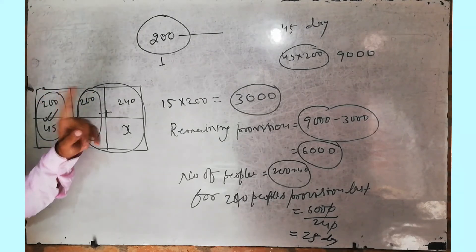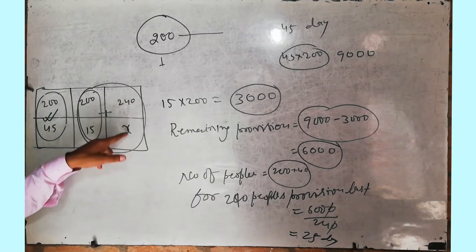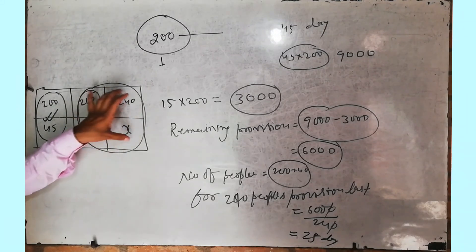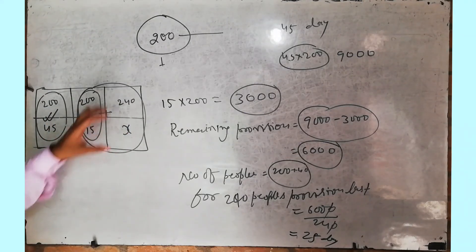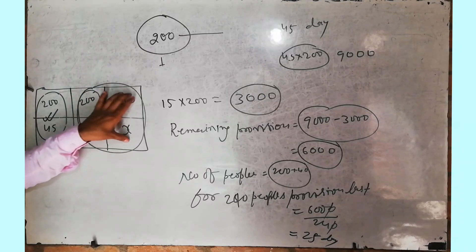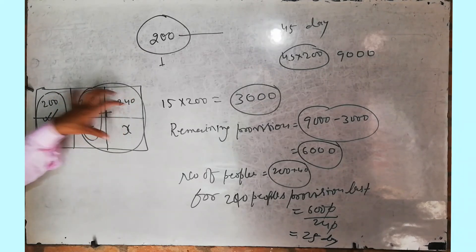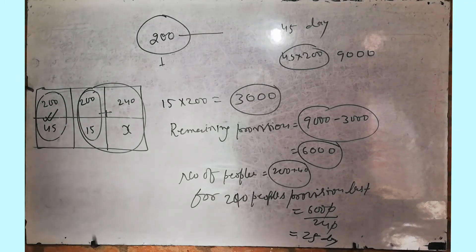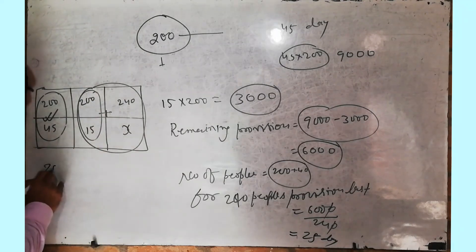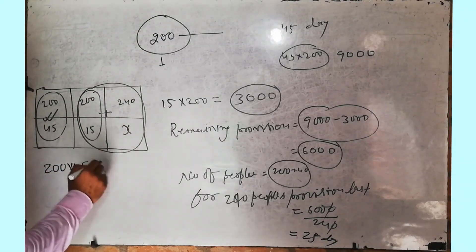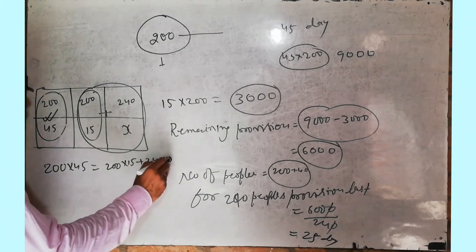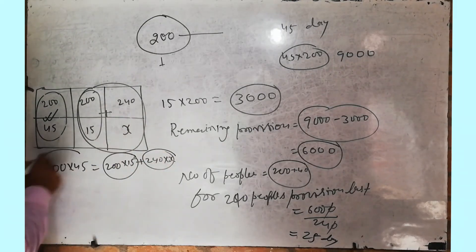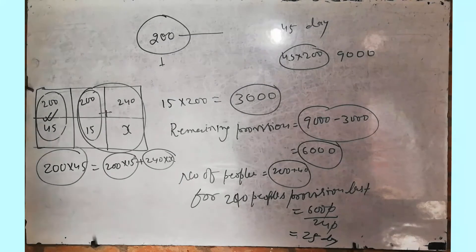After that, 40 more are added. Now how many days will the remaining food last? Simply divide: total remaining 6000 divided by 240 people gives the number of remaining days. That comes to 25 days. This is the inverse proportion method — the total product of persons and days is constant, and we use this to solve.